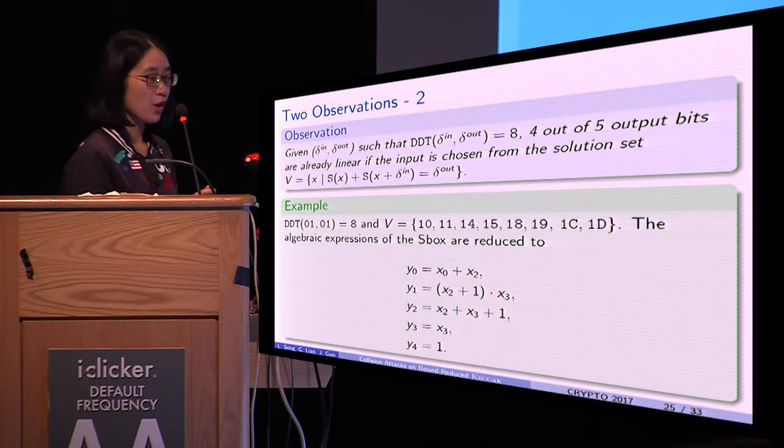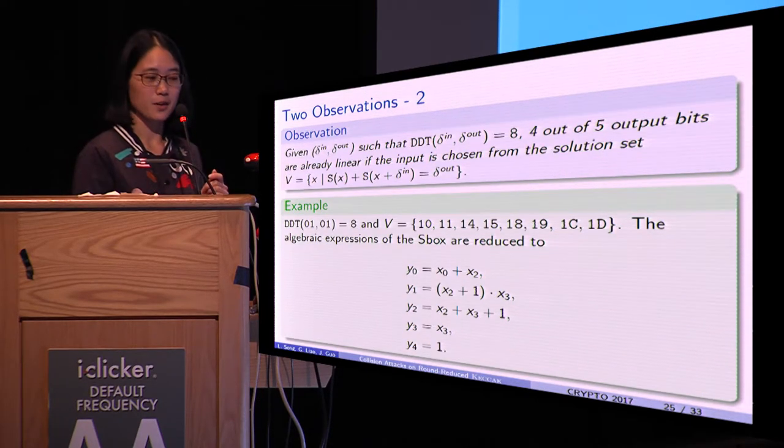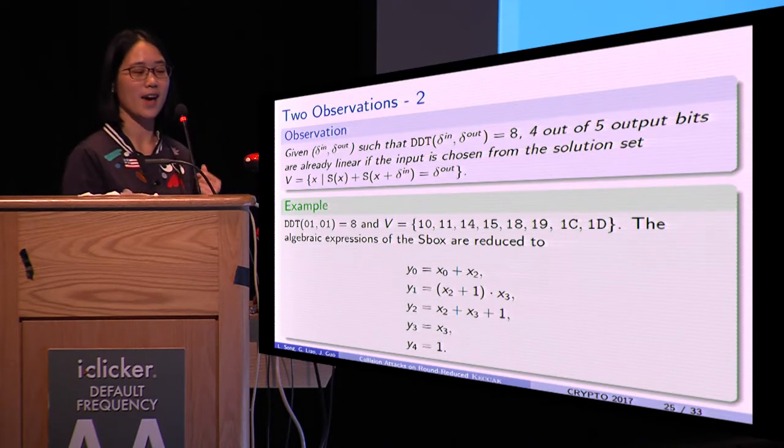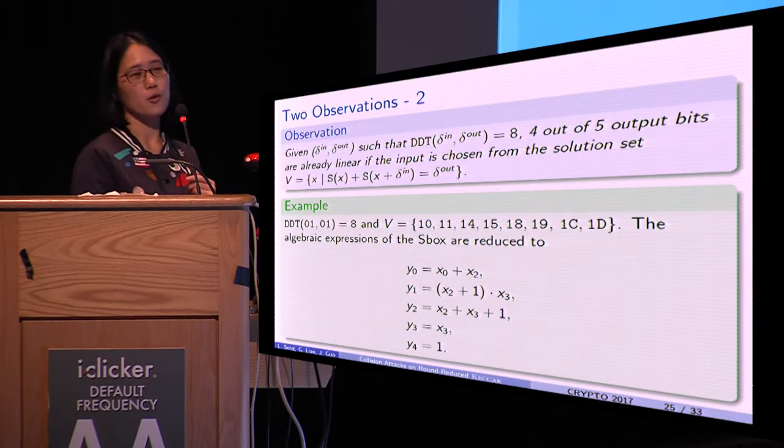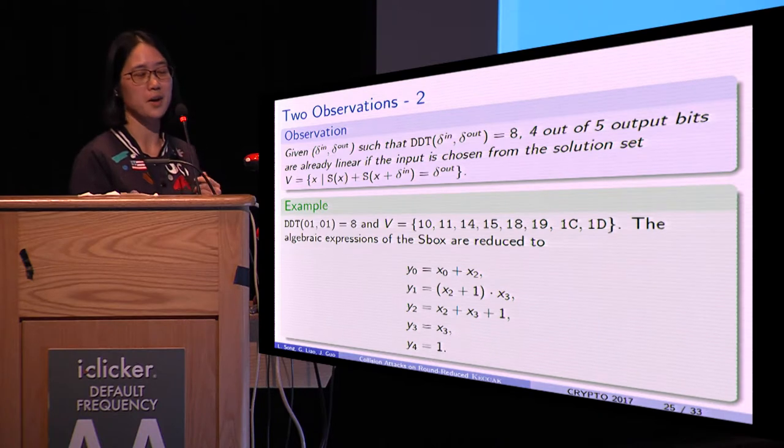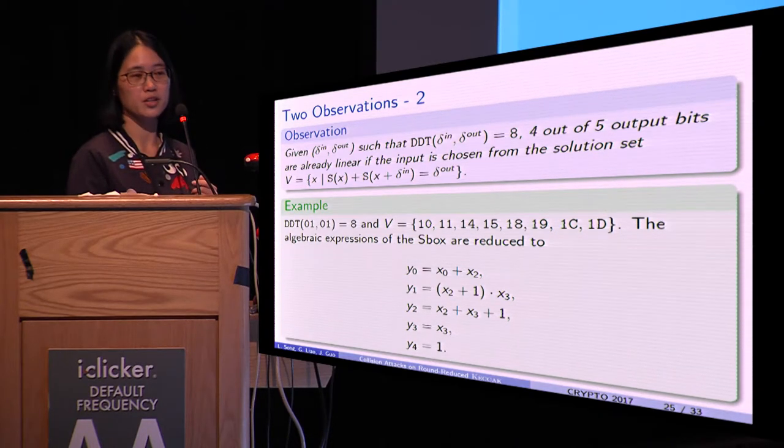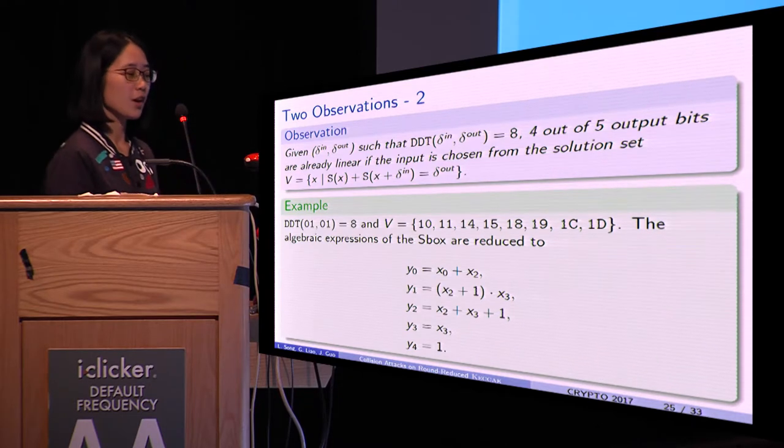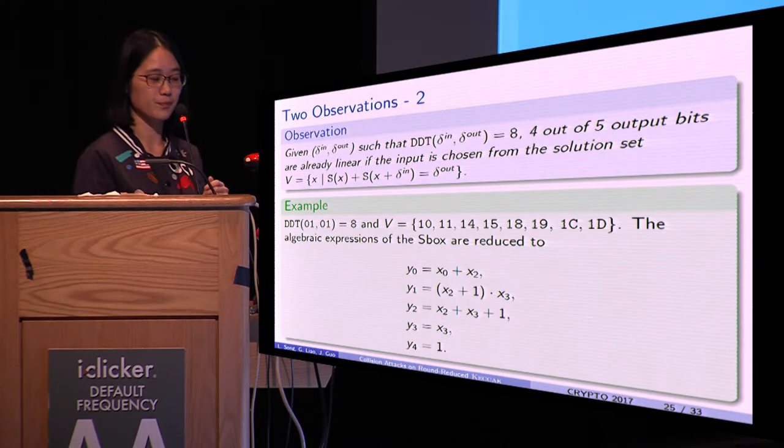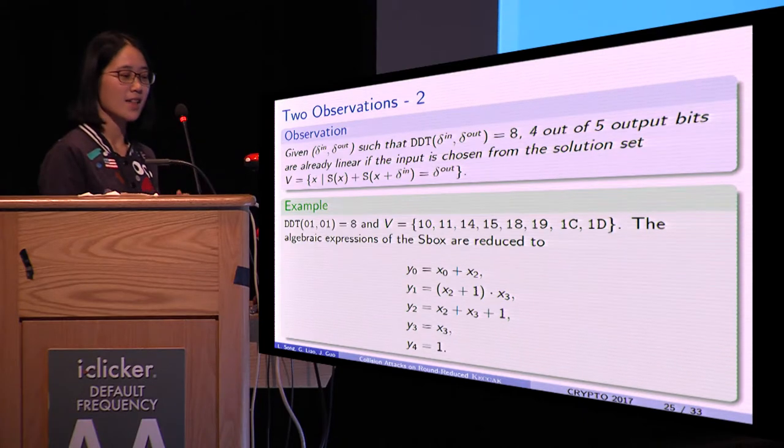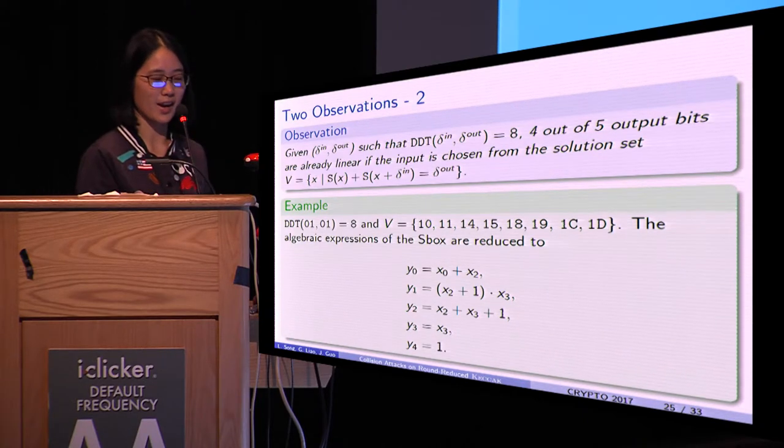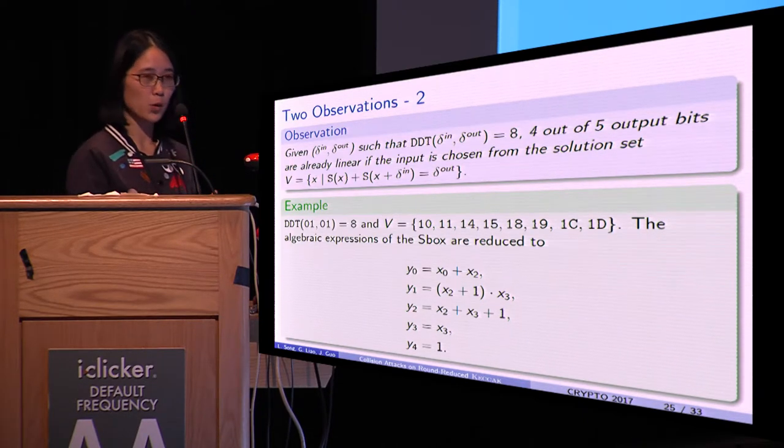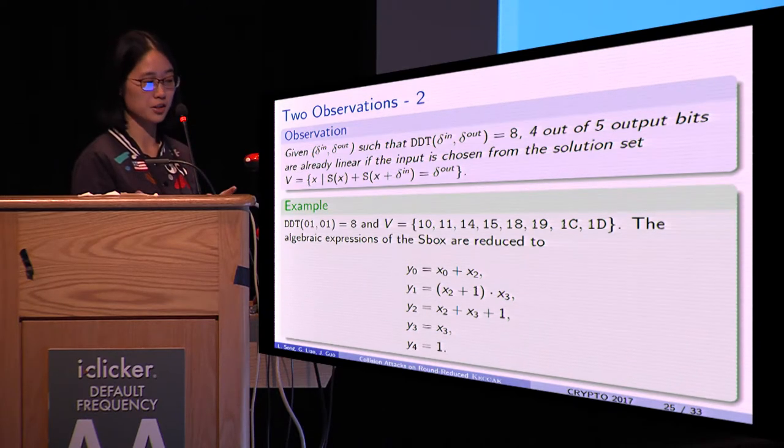Observation two: for an active S-box, if the DDT entry is 8, then four out of five output bits are already linear if the input is chosen from the solution set. For example, if the input-output differences are (0,0) and (0,1), then the DDT entry is 8.